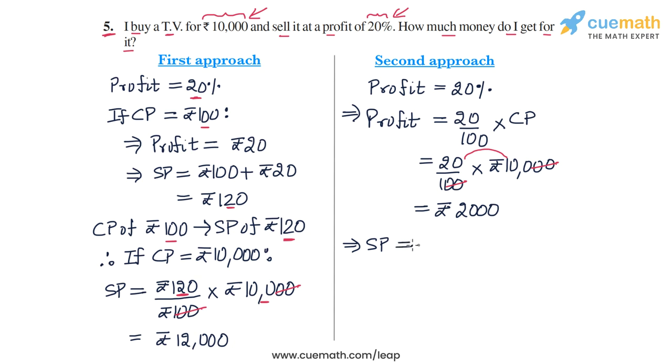And now we calculate the selling price. So the selling price will be the cost price plus the profit. Correct. So the cost price is Rs. 10,000. And the profit we have calculated as Rs. 2000. And this sum is Rs. 12,000. So once again, we arrive at the same answer that the selling price is Rs. 12,000. So in the second approach, we have basically first calculated the profit absolute value and then added it to the cost price.